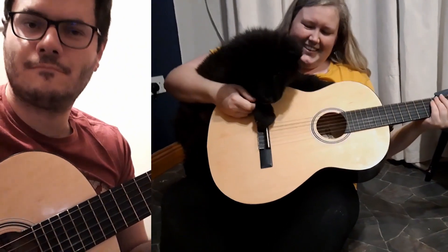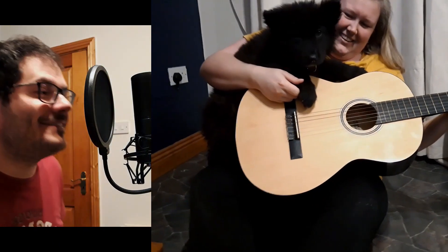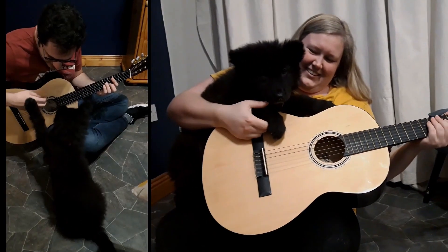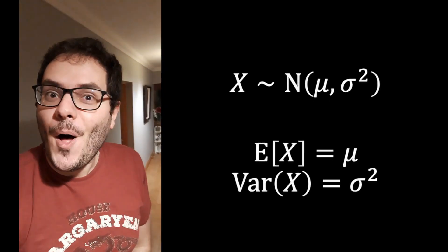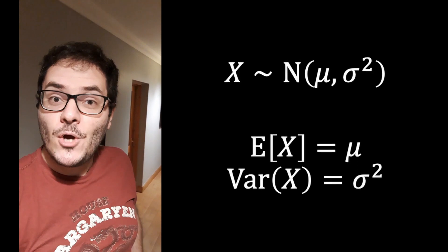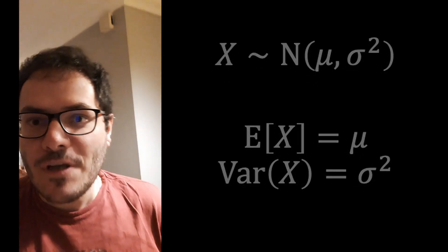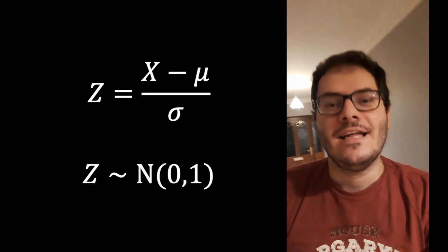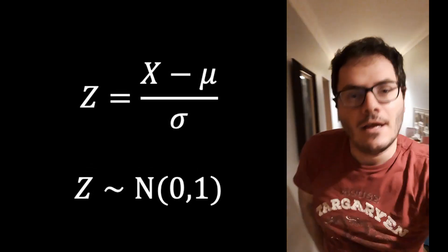Now it's time for the star we all use every day. The normal model has a mean of mu and sigma squared — that's the variance part.